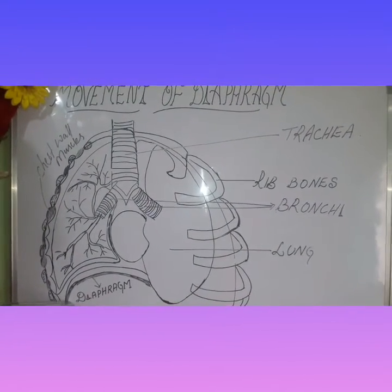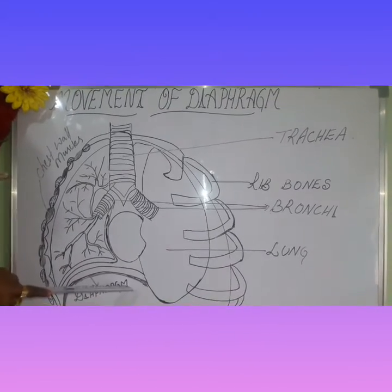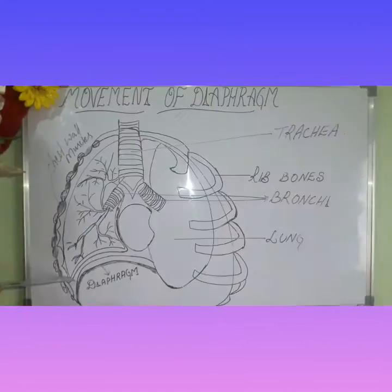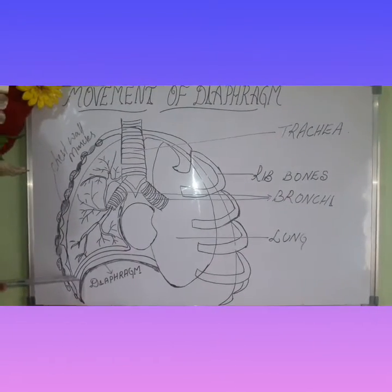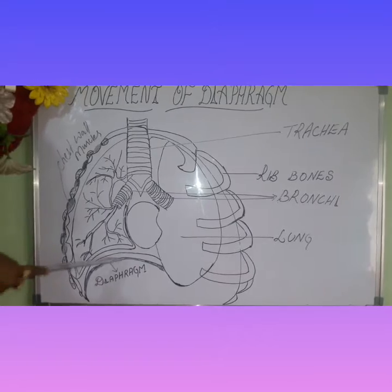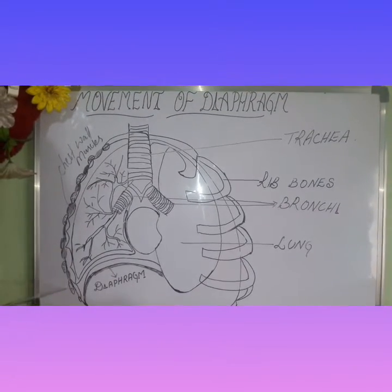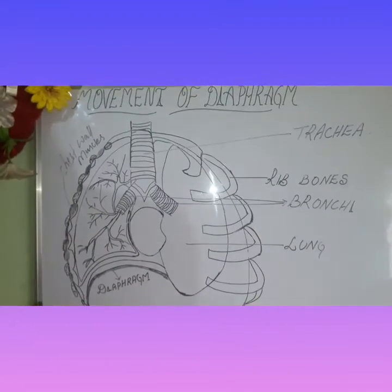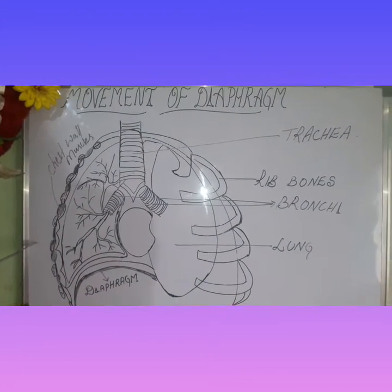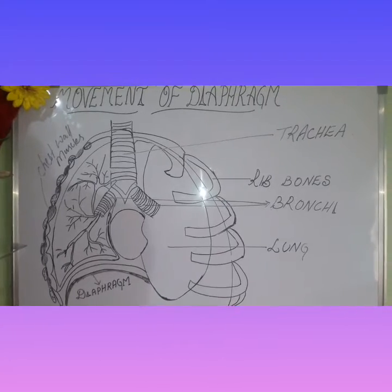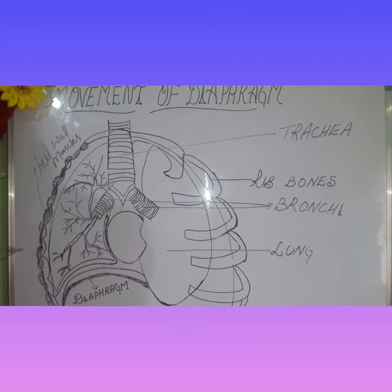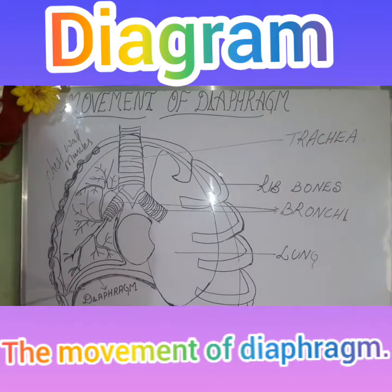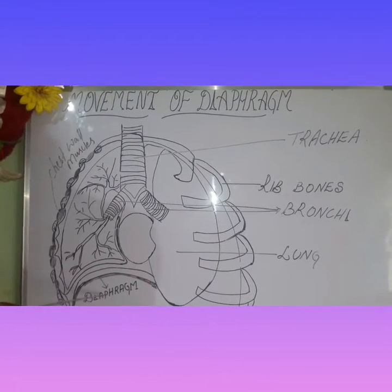When the diaphragm is relaxed — when we breathe out — it is in the shape of a dome with the convex side extending into the chest cavity. When the diaphragm contracts during inhalation, it flattens out a bit, or the dome moves downwards. As a result, the volume of the chest cavity is increased.